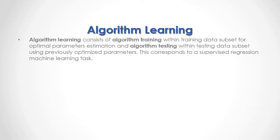Algorithm learning consists of algorithm training within a training data subset for optimal parameters estimation, and algorithm testing within a testing data subset using previously optimized parameters. This corresponds to a supervised regression machine learning task.